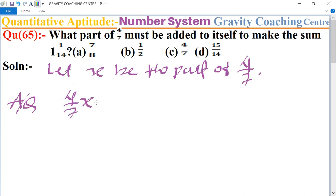Plus, must be added to itself, so itself is 4/7. So the result is 1 whole number 1 by 14, equal to 15/14.